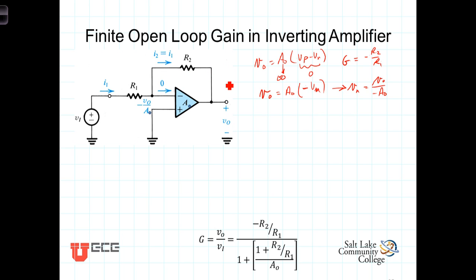So the current I1 will be the current coming up here through I2. Let's just go ahead and do this. So I1 will equal the voltage drop across R1 divided by R1. Well, the voltage drop across R1 is going to be VN minus the voltage here, which is minus Vout over A0 divided by R1.